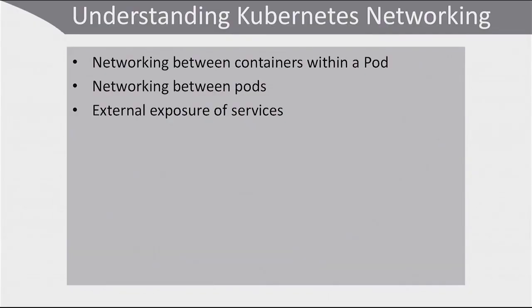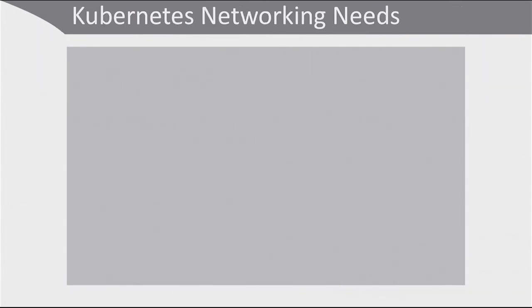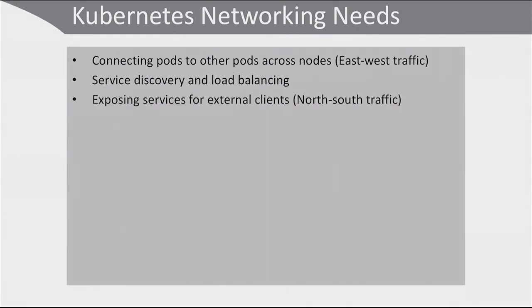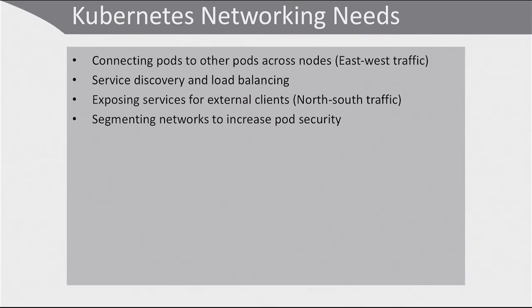Kubernetes networking happens at three different levels. There is networking between the containers within a pod, there is networking between the pods, and apart from that there is the external exposure of services. The Kubernetes networking needs include: a need to connect pods to other pods across nodes — that's what we call east-west traffic. There is a need to do service discovery and load balancing, and a need to expose services for external clients, which is called north-south traffic. And last, there is a need for segmenting networks to increase pod security.